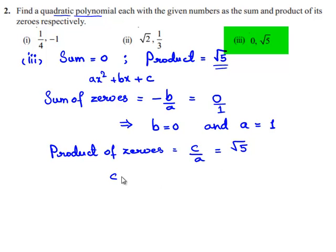So we can write c is equal to, on cross multiplication, c is equal to root 5 times a. But we found the value of a to be 1, so root 5 times 1 is nothing but root 5.